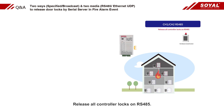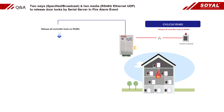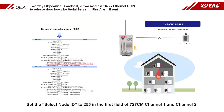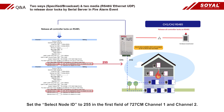Release of controller locks on RS-485. Set the select node ID to 255 in the first field of 727CN, channel 1 and channel 2.